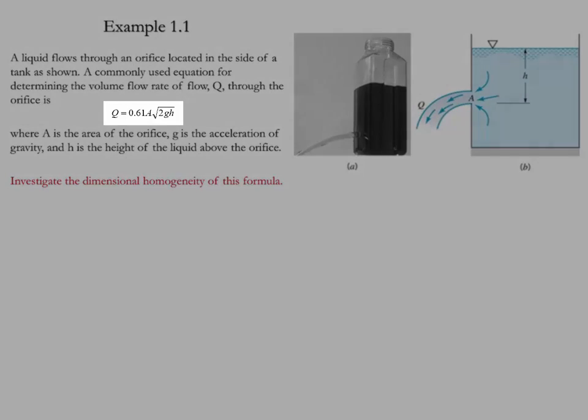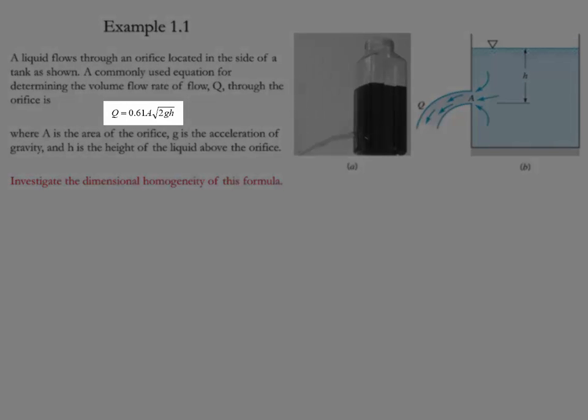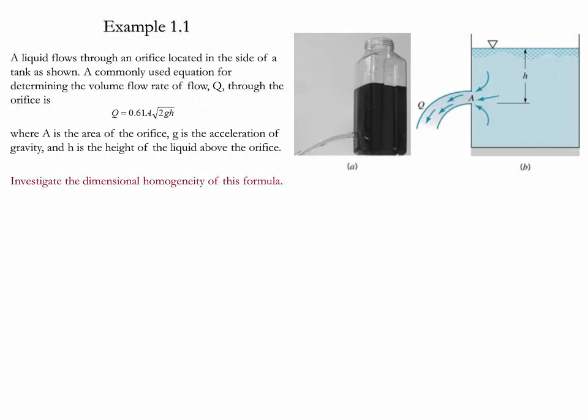The volume flow rate is given by this equation where Q is the volume flow rate, A is the area, g is the gravity, and H is the height and the location of the hole. We need to determine whether this equation is dimensionally homogeneous.